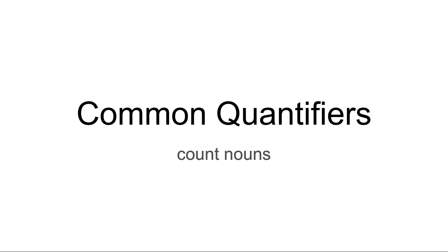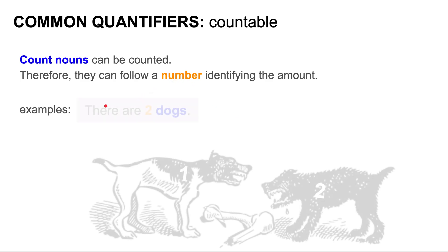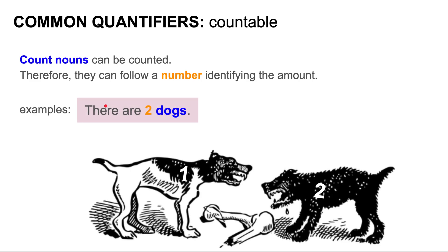What are count nouns? Count nouns are nouns that can be counted. Therefore, they can follow a number identifying the amount. For example, there are two dogs — one, two — two dogs. Dogs is a noun that can be counted.